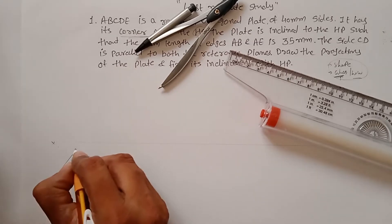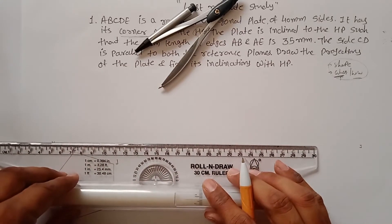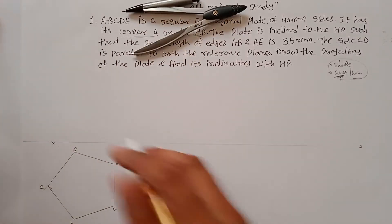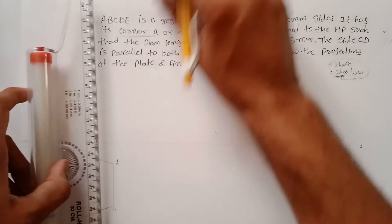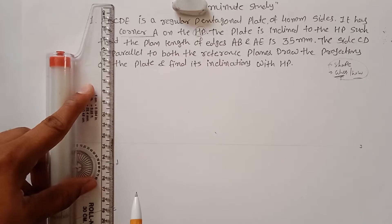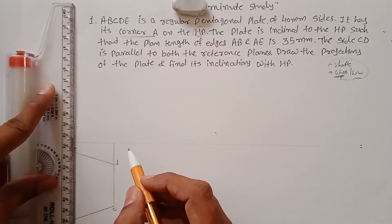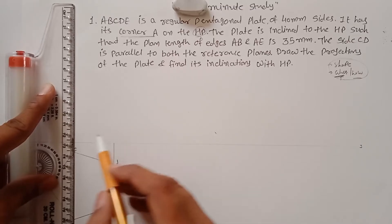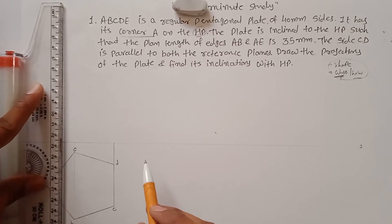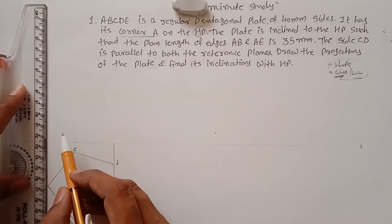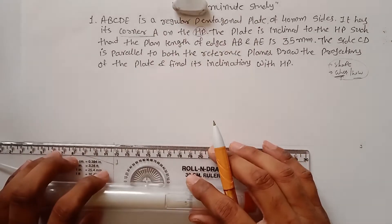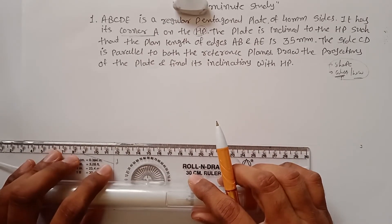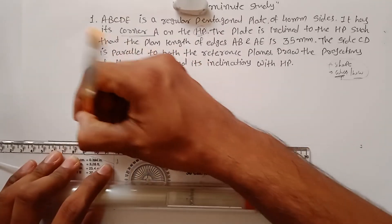Label the top view in small letters: a, b, c, d, and e. Extend the XY line and draw projections of the pentagon to construct the front view. Remember, any plane has one view as the true shape and the second view as a straight line. Draw very thin projection lines for the front view.